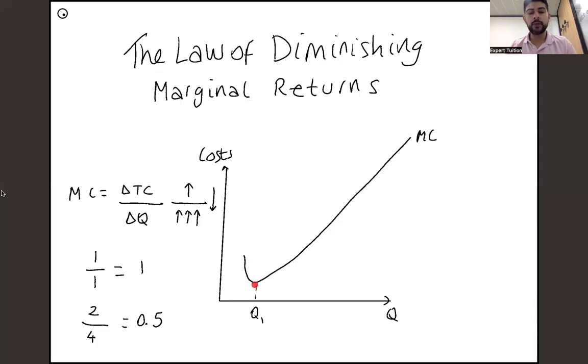But now what happens when I add the fifth chef to the kitchen? When I add the fifth chef, they start to get in each other's way a little bit. Now you have to wait for an oven to free up to be able to cook your meal. The point is, although output will still probably go up, they'll probably produce more meals together than they would have if they were four chefs, the problem is that output now is going up at a slower rate than total cost. In other words, the top of the fraction is going up at a faster rate than the bottom of the fraction.